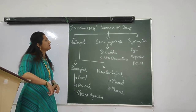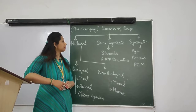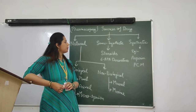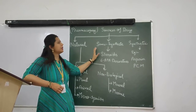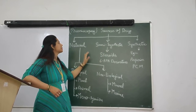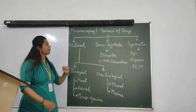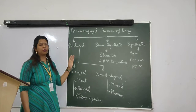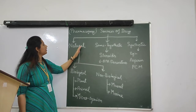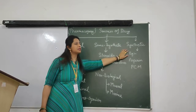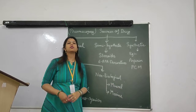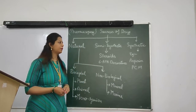If we look at this chart, we can easily say that the sources of drugs are broadly divided into natural, semi-synthetic, and synthetic sources of drugs.